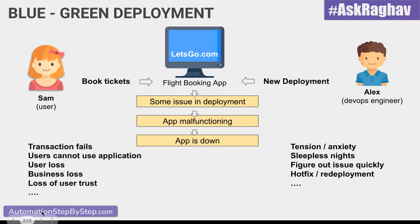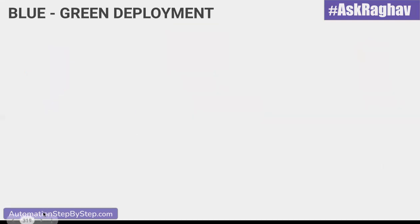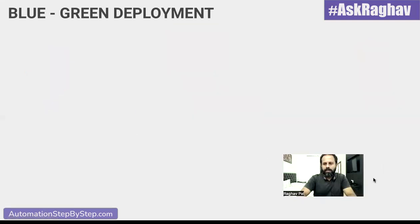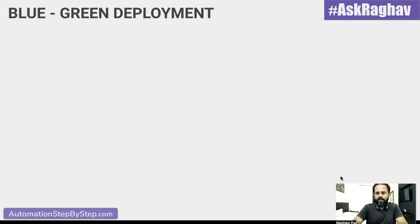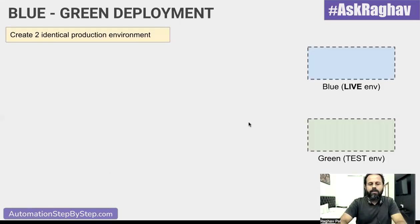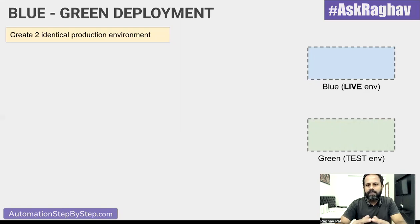To solve this problem, we have blue-green deployment. In blue-green deployment, we keep two identical production environments — one is called blue and the other one is called green. One of these environments is the live environment where the users are using the application.